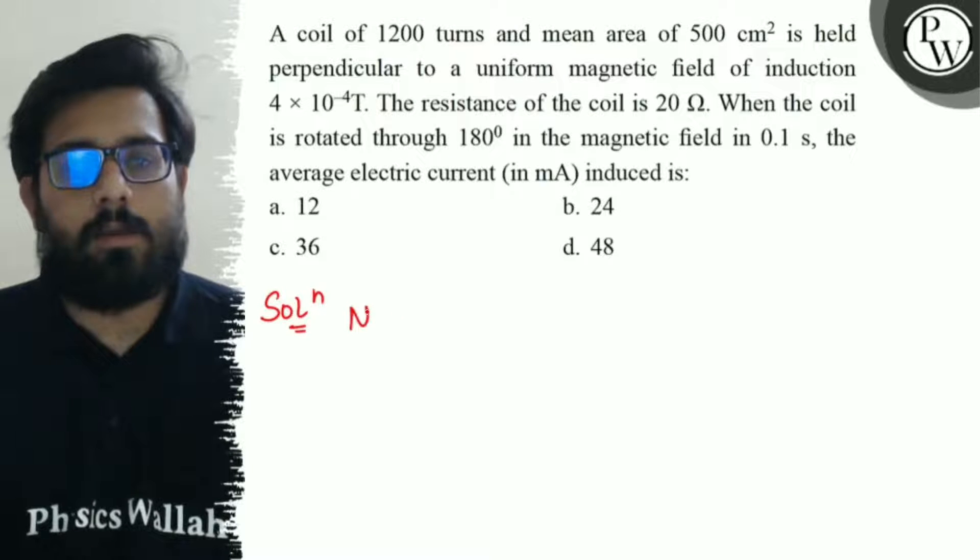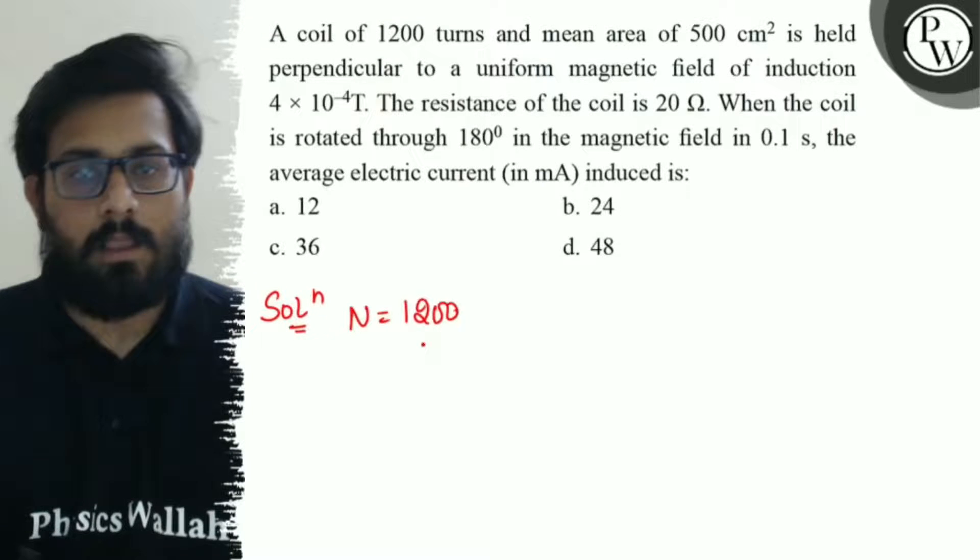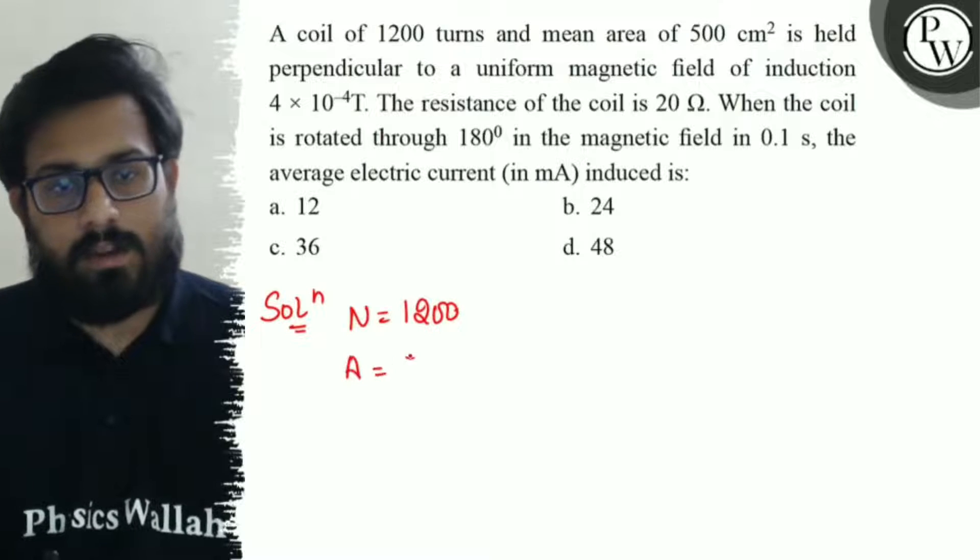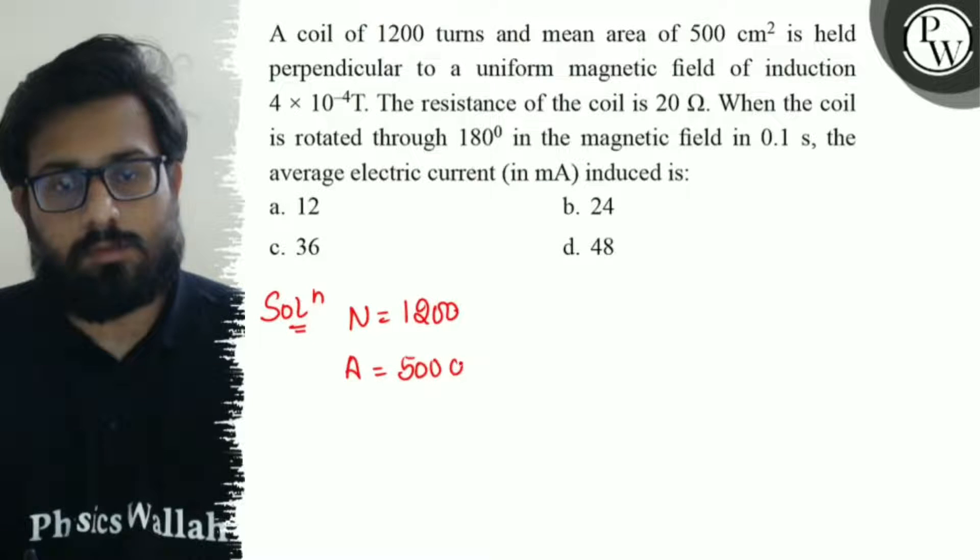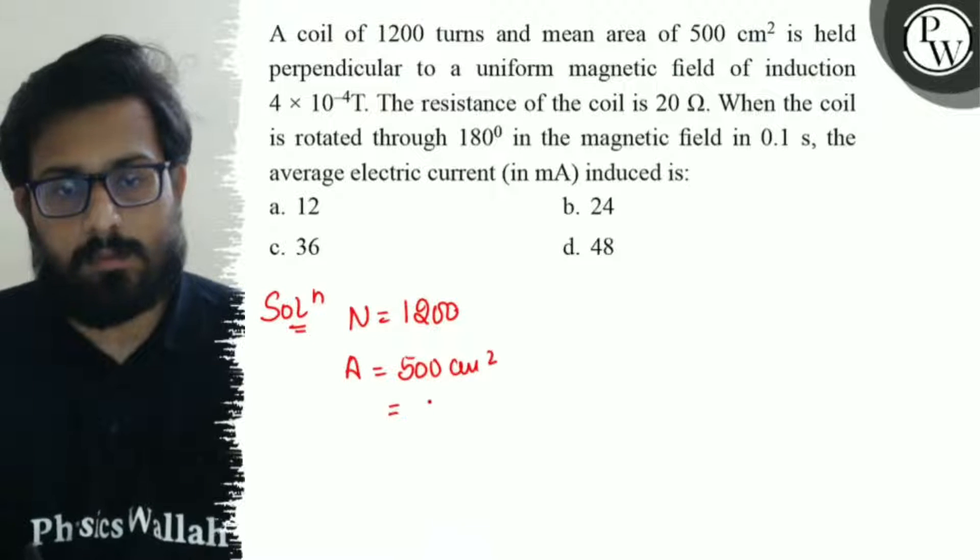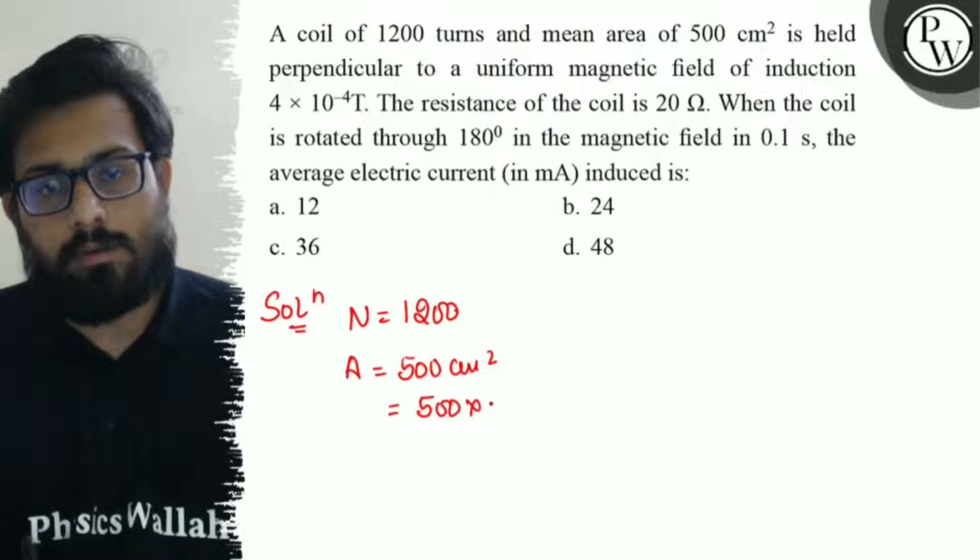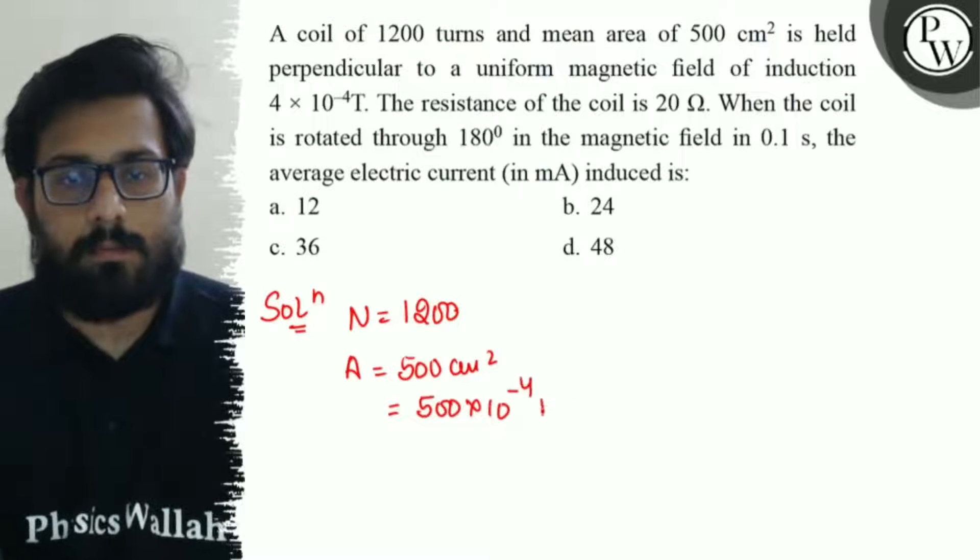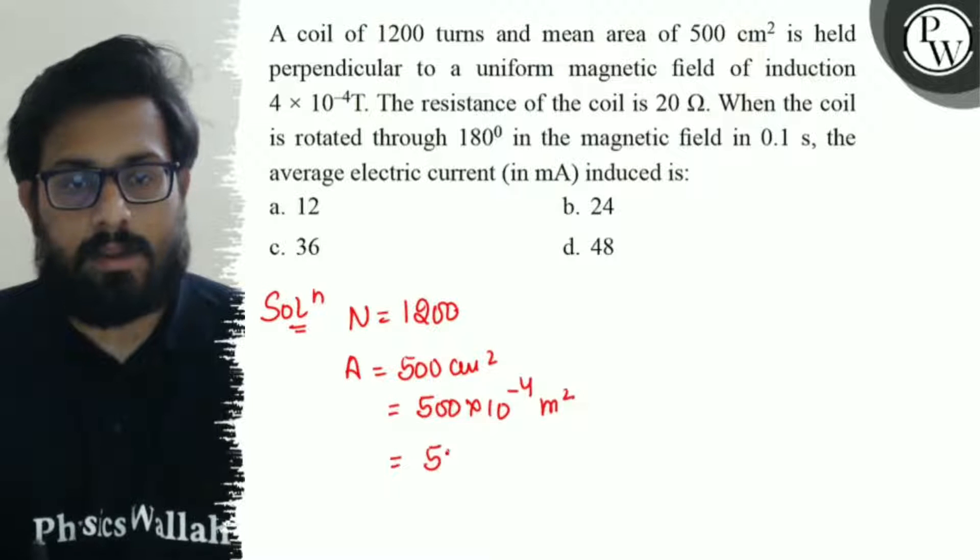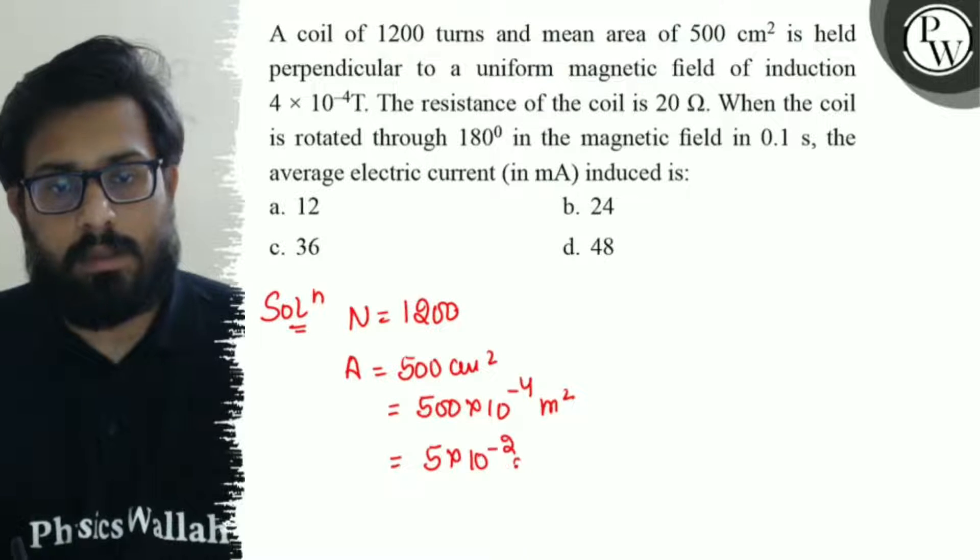First given is number of turns N = 1200. Area is given as 500 cm². Converting to SI units in square meters, this comes out to be 500×10⁻⁴ m², which can be written as 5×10⁻² m².